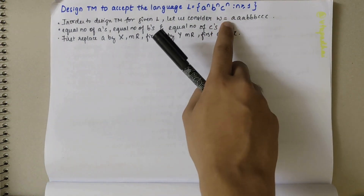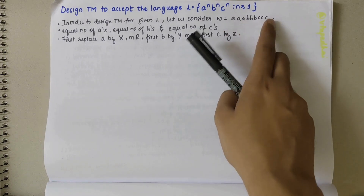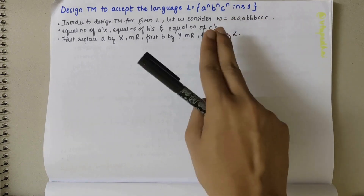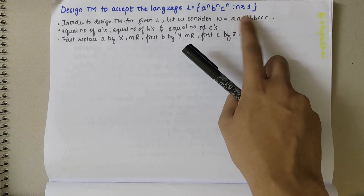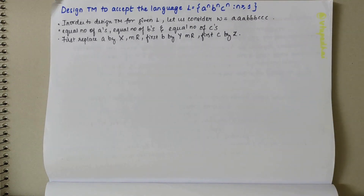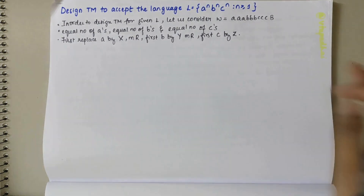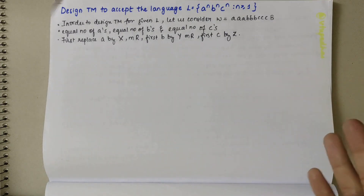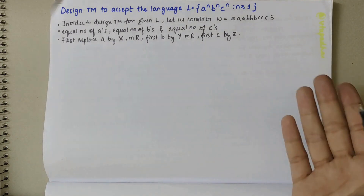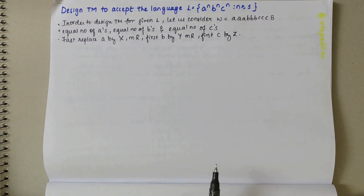For each A, we need to find its corresponding B and C. So the first A, first B, and first C would be a match; then the second A, second B, second C; then the third A, third B, third C, followed by a blank at the end. When we have blank at the end, it means the string is accepted. We need to repeat this process till all A's are replaced by X, all B's by Y, and all C's by Z.